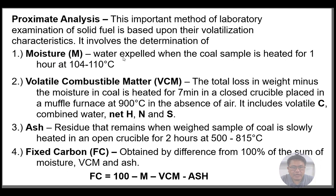Moisture is defined as the water that is expelled when the whole sample is heated for one hour at a temperature of 104 to 110 degrees Celsius. Volatile combustible matter (VCM) is the total loss in weight minus the moisture in coal when it is heated for seven minutes in a closed crucible placed in a muffle furnace at 900 degrees Celsius in the absence of air. It includes volatile carbon, combined water, net hydrogen, nitrogen, and sulfur.